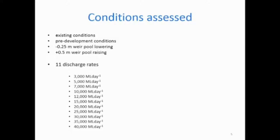For each one of those conditions we did 11 discharges. 3,000 megalitres a day, which is the low entitlement flow, all the way up to 40,000, which is not quite to the level that it spills over the banks but close to the bank full condition.